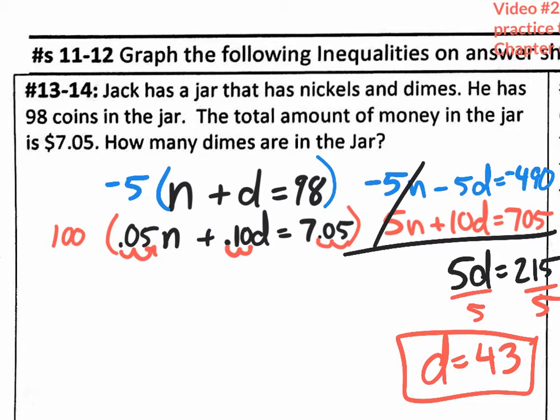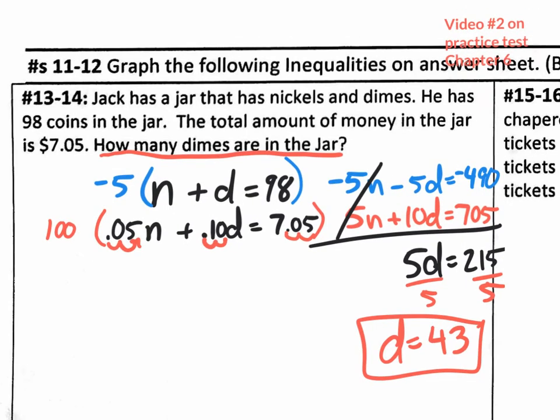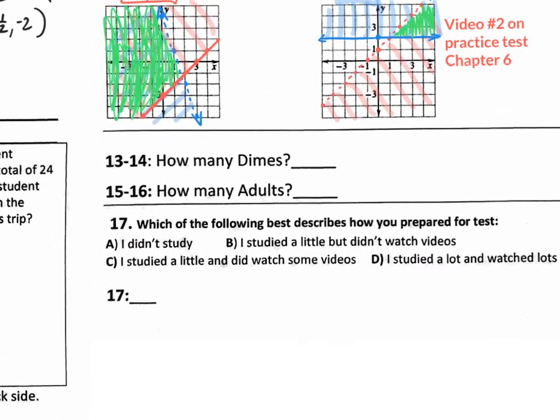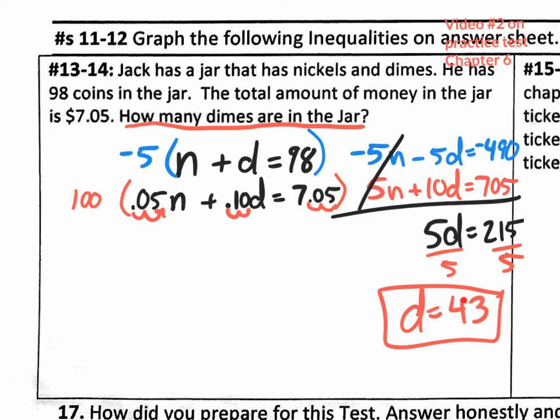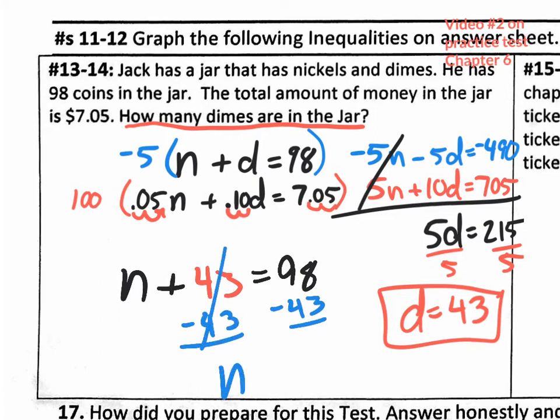So there's 43 dimes. And guess what? That's what they're asking for. So you'd be done. On your answer page, how many dimes? 43. Now, on tomorrow's test, I might ask for nickels. So if I did ask for nickels, what would you do? You'd take that 43, plug it right in there for dimes, and rewrite your equation. N plus 43 equals 98. And then you would solve it. Subtract 43, subtract 43, N equals 55. If they ask you for nickels, but they ask you for dimes. So the answer to this one is 43.